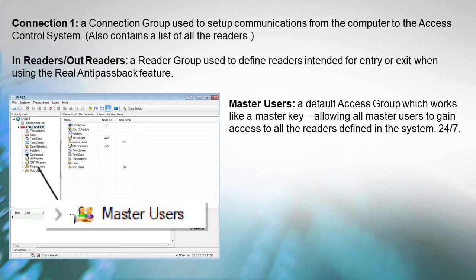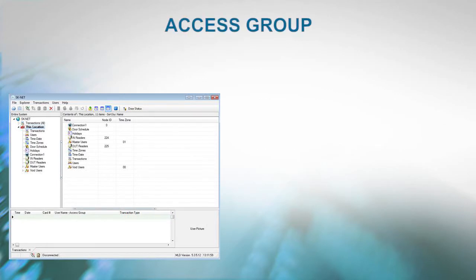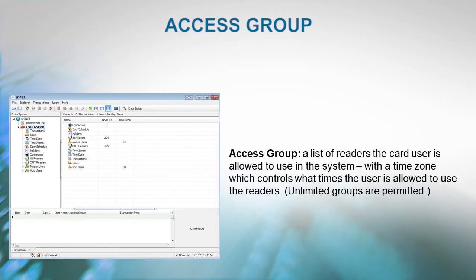Master Users is a default access group which works like a master key. It allows all master users to gain access to all the readers defined in the system 24 hours, 7 days a week. Void Users is also a default access group which denies all void users access to all the readers in the system. This group is used for lost cards or someone who no longer is allowed access. Access Group is defined as the list of readers the card user is allowed to use in the system along with a time zone which controls what times the user is allowed to use the readers.